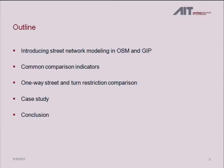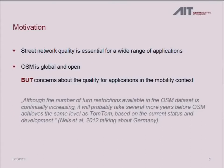Then we introduce two new indicators which are specific for vehicle routing — we look at the quality of the street network for vehicle routing. It's important that the one-way street directions are correct and that you have the turn restrictions modeled for vehicles in the street network. We have developed indicators to measure the correctness of those. I will end with the case study for Vienna before the conclusions.